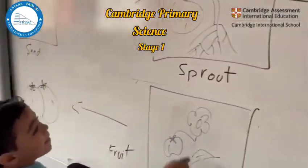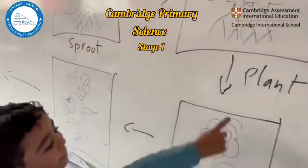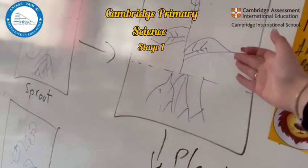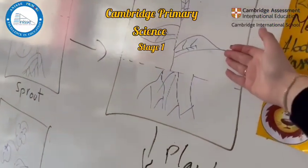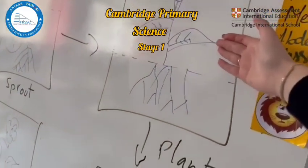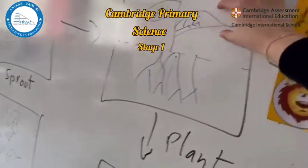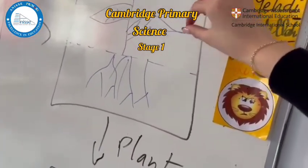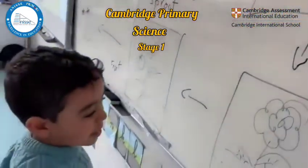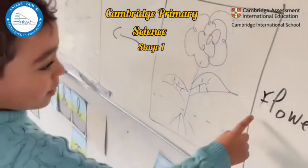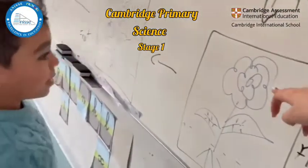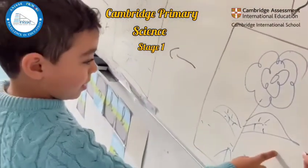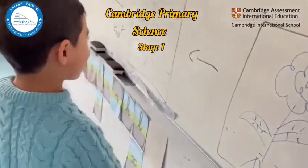Green, sprouts, plants. What do we have in the plants? We have, what are those? Roots. Flowers. Leaf, roots.